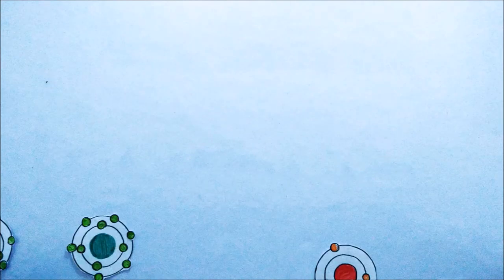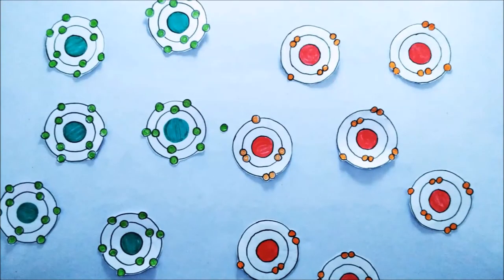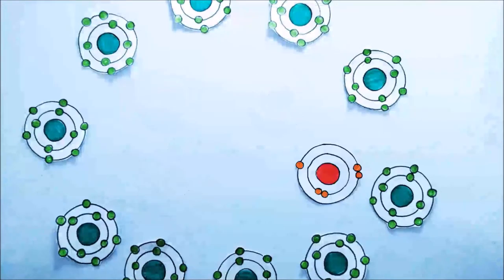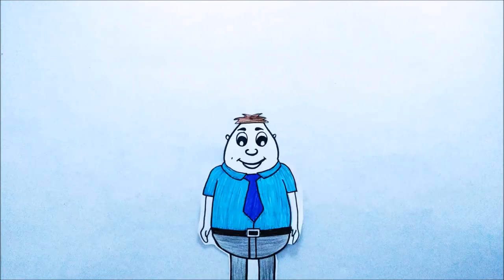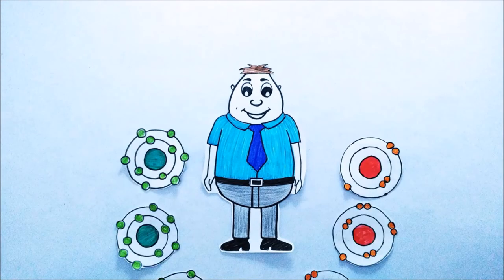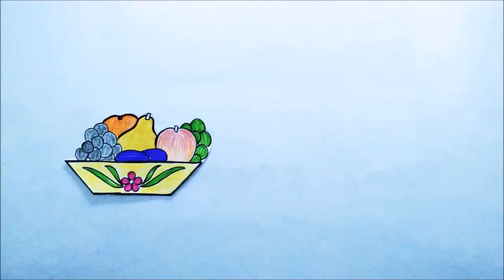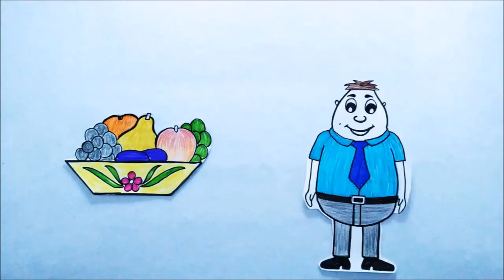These antioxidants basically give an electron to free radicals. Thus, they stop the rampage caused by free radicals. The balance of free radicals and antioxidants is necessary for our body to function. So eat a lot of vegetables and fruits and stay healthy.